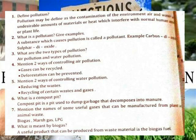What are two types of pollution? Air pollution and water pollution. Mention two ways of controlling air pollution: gases can be recycled, deforestation can be prevented. Mention two ways of controlling water pollution: reducing the wastes, recycling certain wastes and gases.